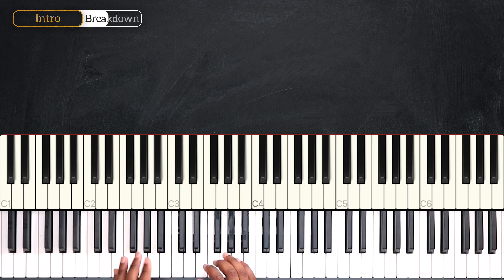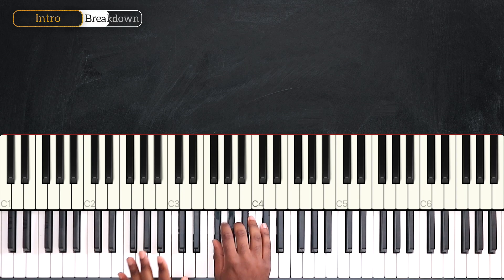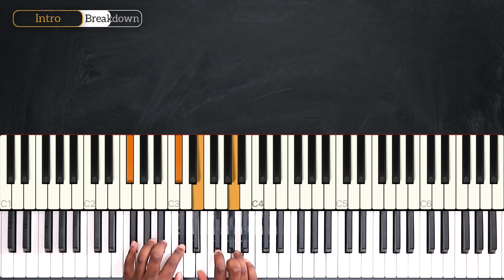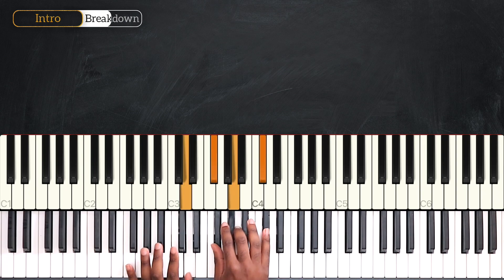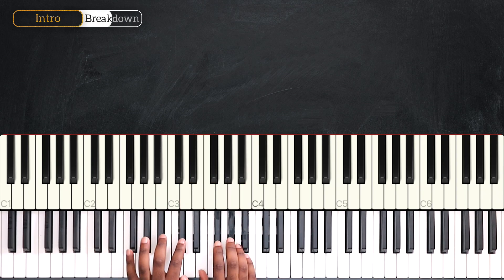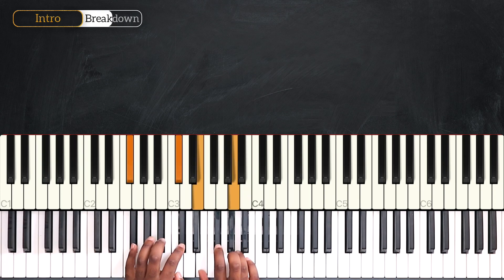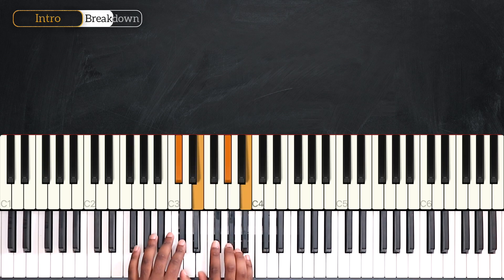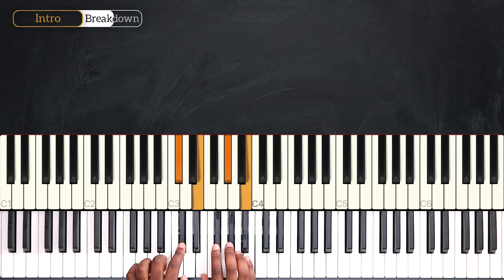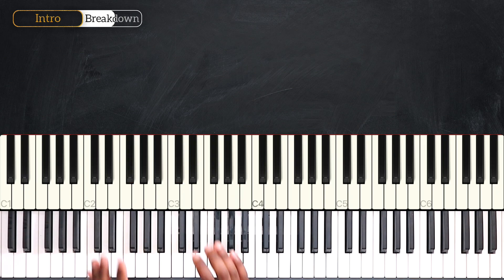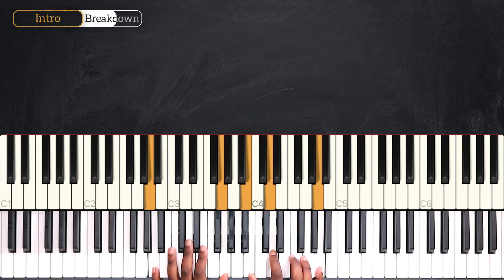So like I just did, we're going to do that 3 times, the same movement 3 times back to back. And that's for the first part of the intro. For the second part, we're going to play over A 11.